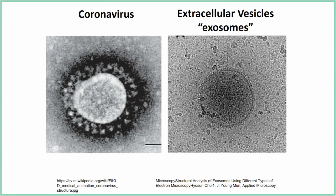Looking at the electron microscopy pictures of SARS-CoV-2 and an extracellular vesicle/exosome, they are very different from a morphological perspective. Even though they have some similarities, and coronavirus manufacturing partly hijacks the exosome manufacturing process in the cell, it's still a fundamentally different beast. You're absolutely right, Jan.